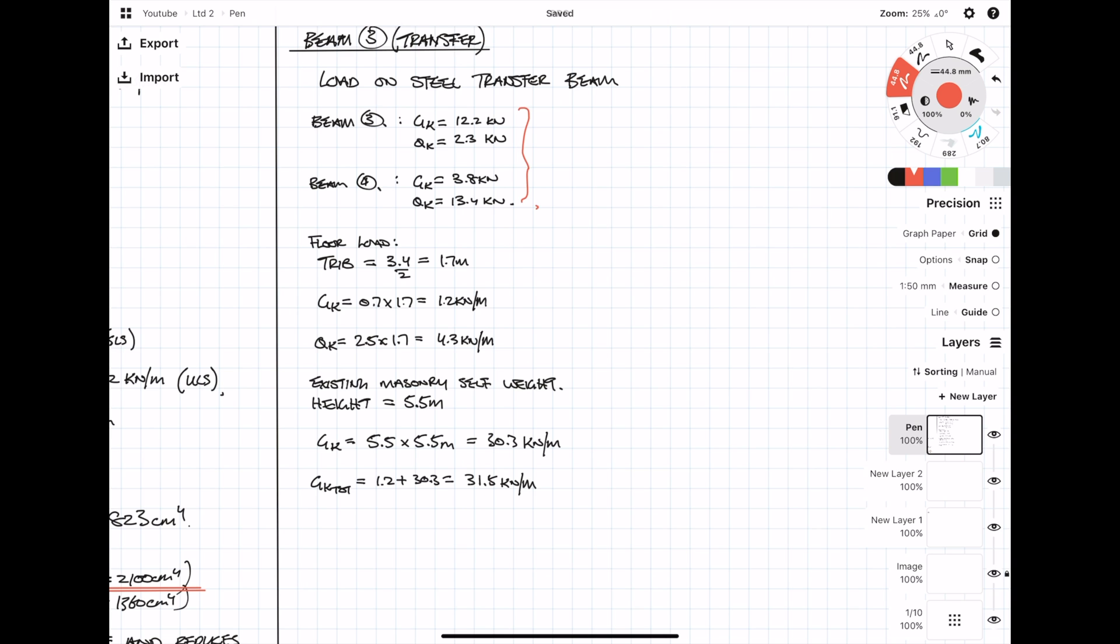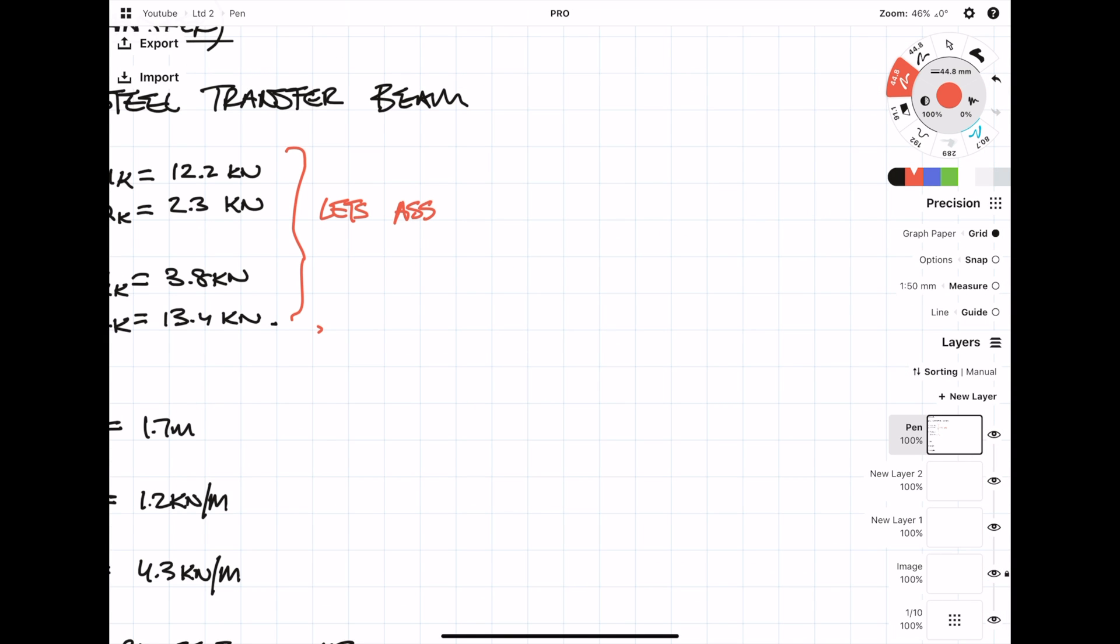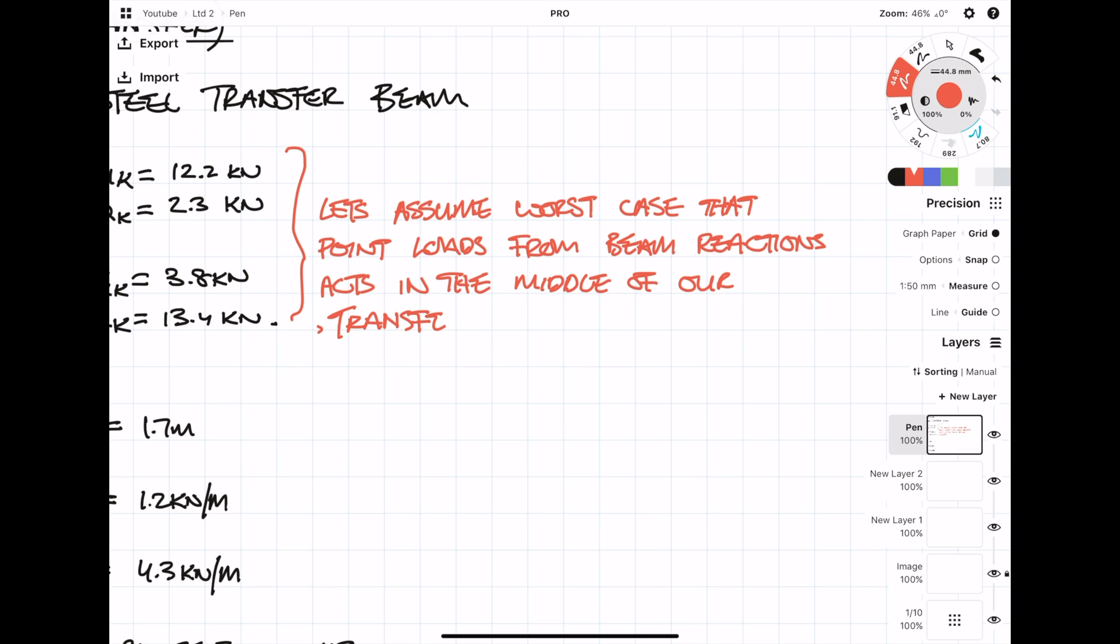For simplicity of doing a hand calculation, I'm going to assume that both the incoming beams are centered on our transfer beam. Both the incoming beams are pretty close to the center point, so it's not going to be too conservative, but it is going to be a little bit more conservative. Because it's a transfer beam transferring another beam, I kind of don't mind it being a little bit more conservative than normal. If I had more time, then obviously I would check it for the right locations of the beams, and if I was doing this normally, I probably wouldn't even bother doing it by hand—I'd just smash the numbers into a piece of software.